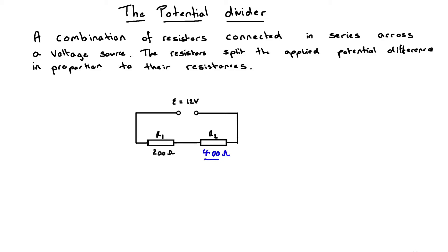What we've done now is change the resistor in the R2 position. We've replaced the 200 ohm resistor with a 400 ohm resistor. This increases the total circuit resistance to 600 ohms, but R2 is making up the greater proportion of that total circuit resistance. It's 400 ohms out of a total of 600 ohms, and therefore it will take the largest share of the 12 volt applied PD. These resistors will split that applied voltage in proportion to their resistances.